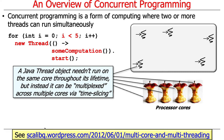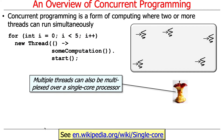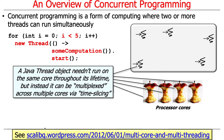The operating system scheduler lets a thread run for a while on some core, then preempts it, brings another thread over to run, and so on. Multiple threads can also be multiplexed over a single core processor, so it's perfectly plausible to have multiple threads over one core or multiple threads over multiple cores.